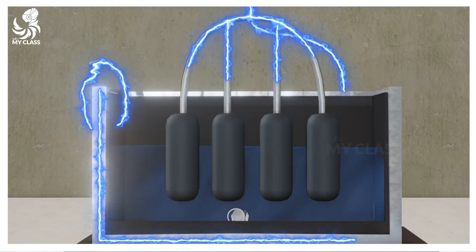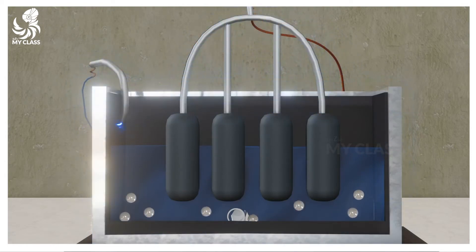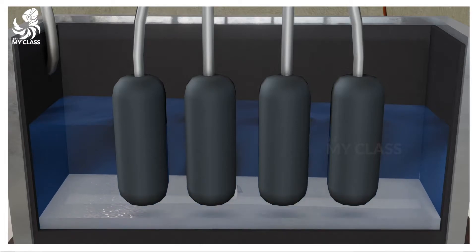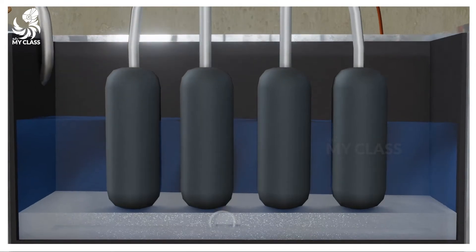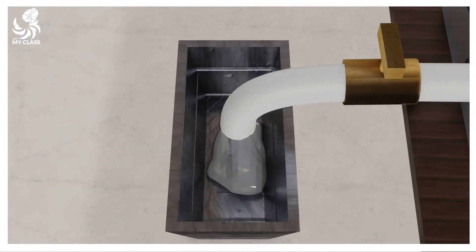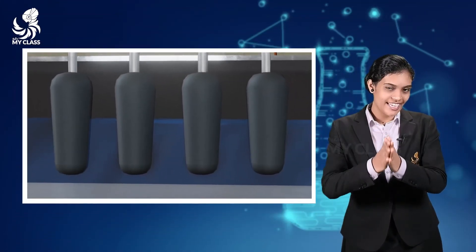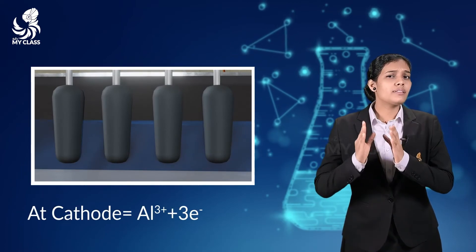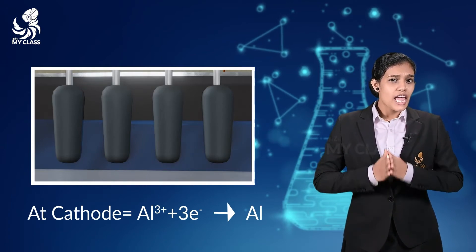When electricity passes, aluminium is obtained at the cathode. The reaction at the cathode is: Al³⁺ + 3e⁻ → Al.